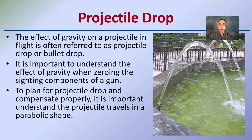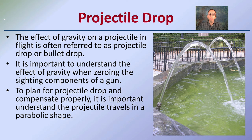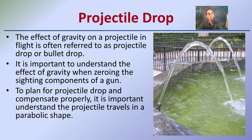Then we have projectile drop. The effect of gravity on a projectile in flight is often referred to as projectile drop or bullet drop. It's important to understand the effect of gravity when zeroing the sight components of a gun. To plan for projectile drop and compensate properly, it's important to understand that a projectile travels in a parabolic shape. This is shown here with water coming out of a water pump going up and coming down. When estimating where a shooter may have been, if we have the endpoint and the gun to match up the sights, we have to keep in mind that the bullet is traveling in a parabolic shape.